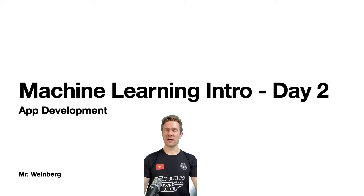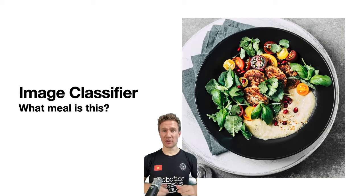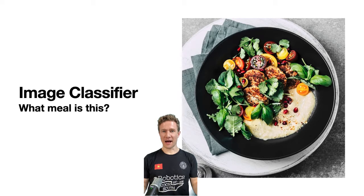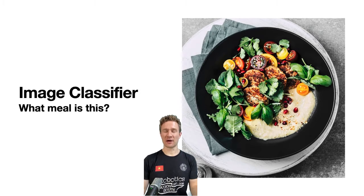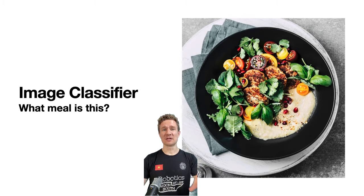Hey everybody, welcome to day two of machine learning intro for the app development class. Last time we talked about my plan to build an image classifier to identify from a photo what meal I'm looking at — is it breakfast, lunch, or dinner — based purely from an image. An image classifier is a kind of machine learning algorithm whose job it is to take an image and classify it. Hopefully today's examples will give us a better idea of what that means.